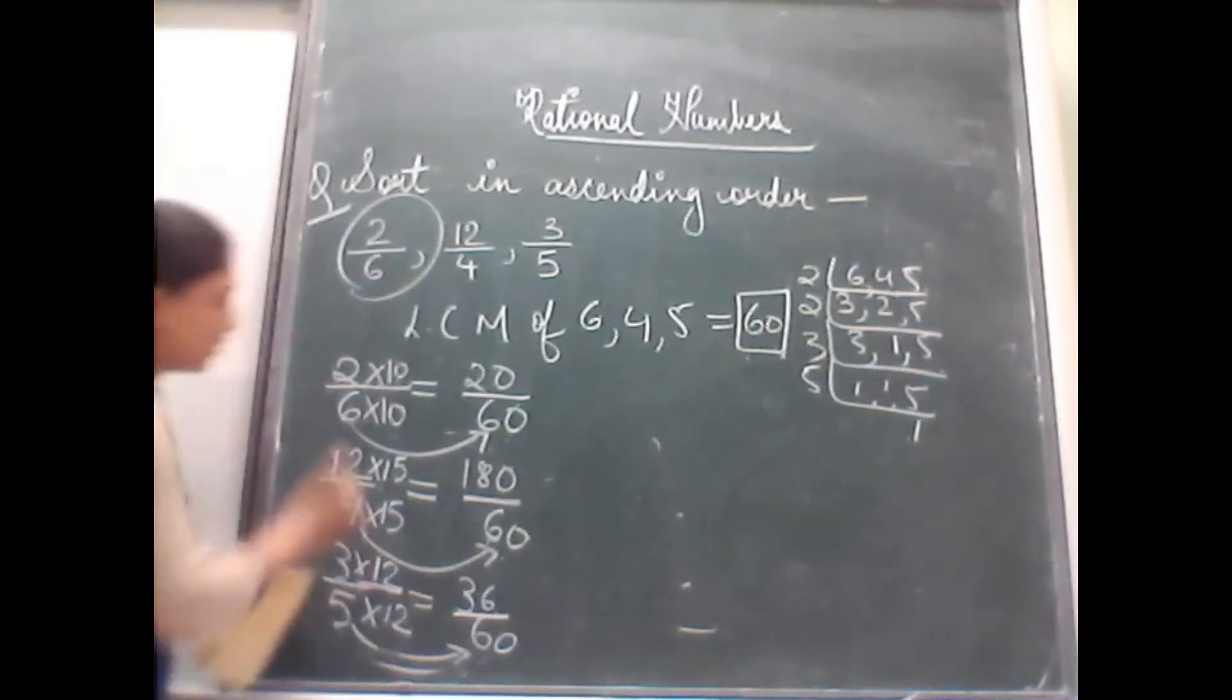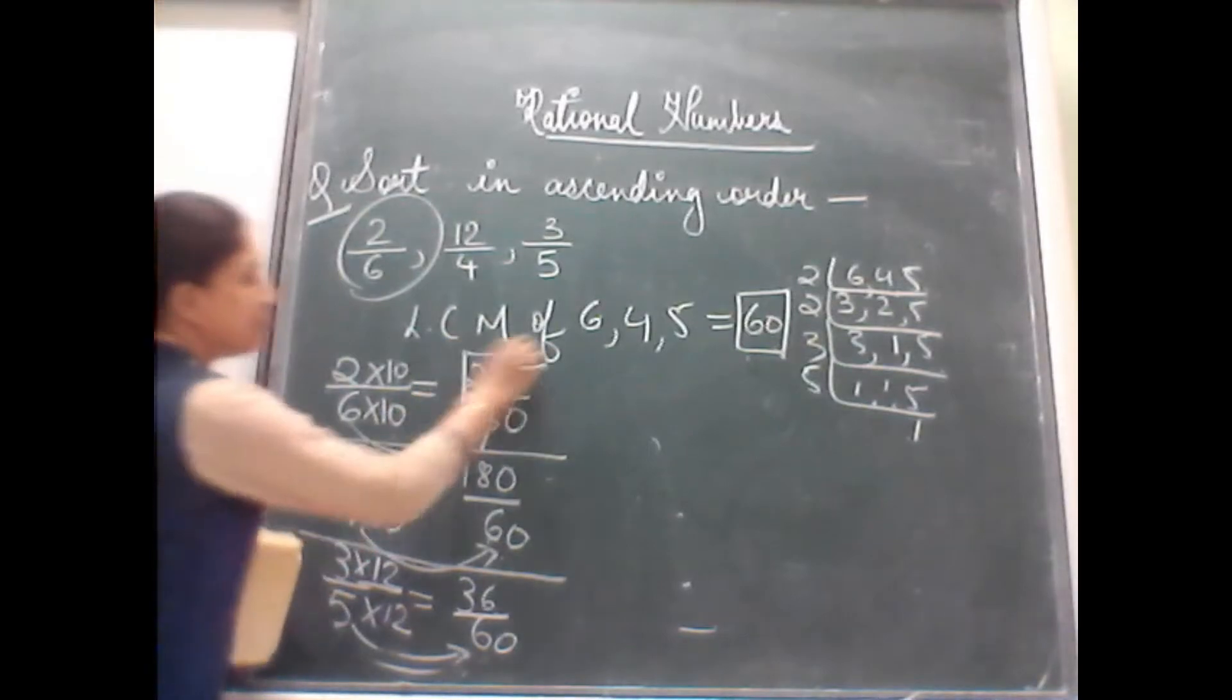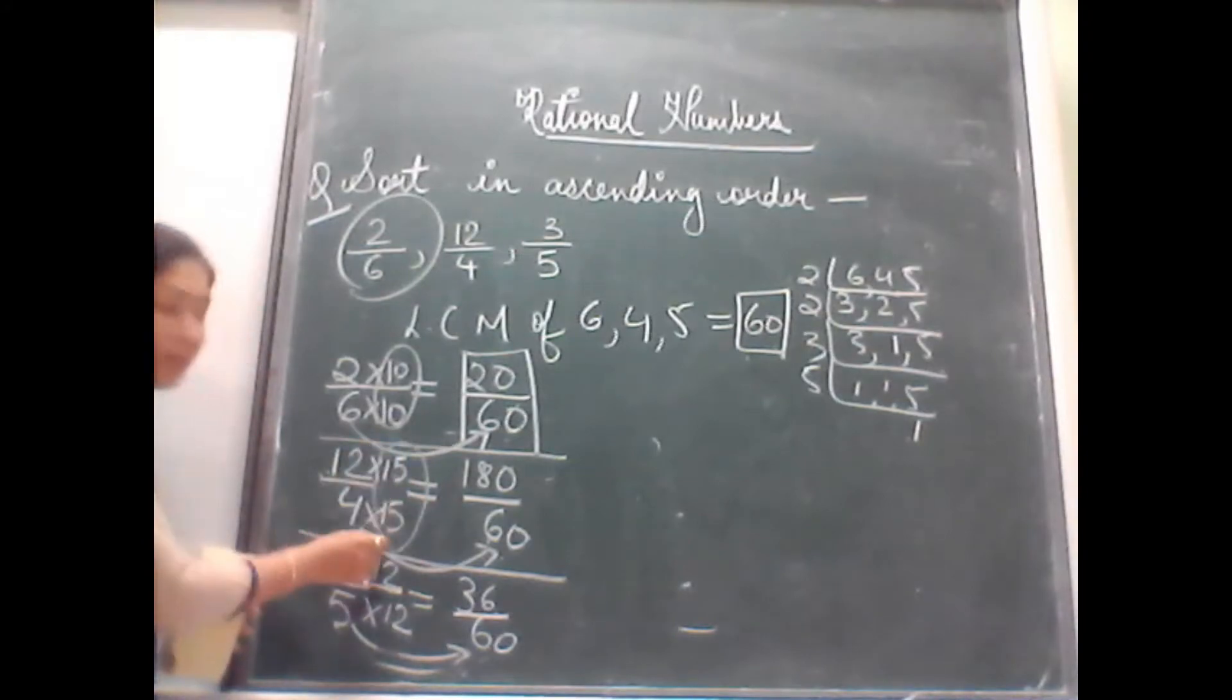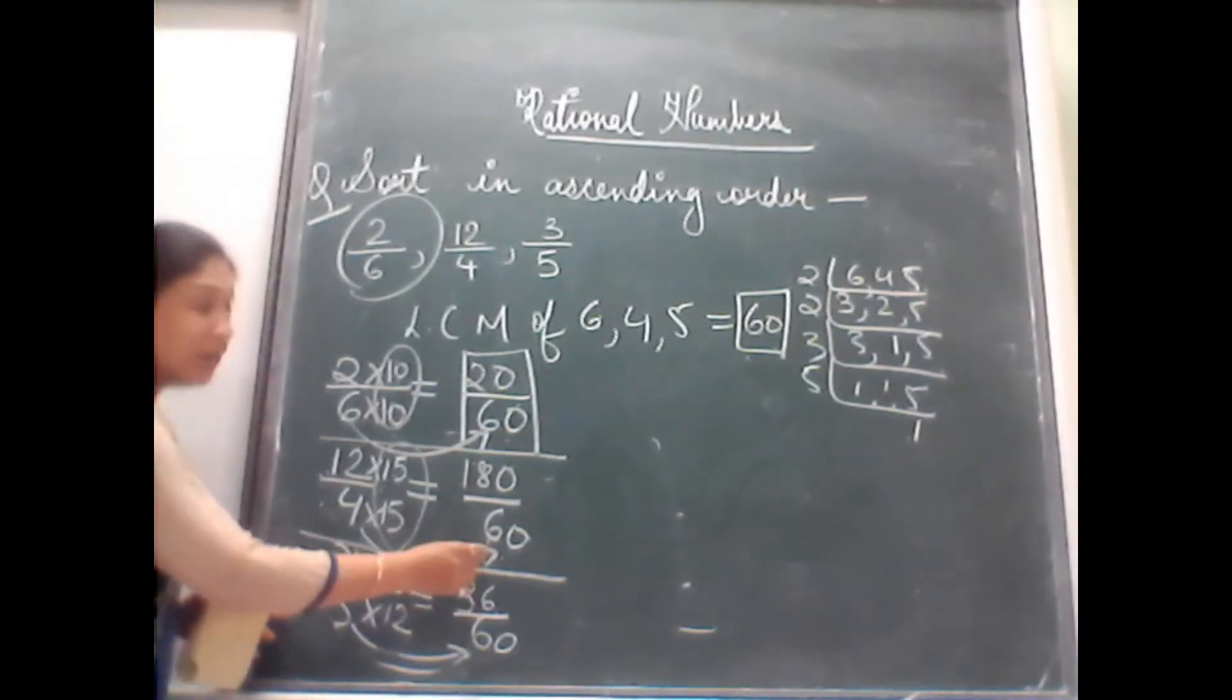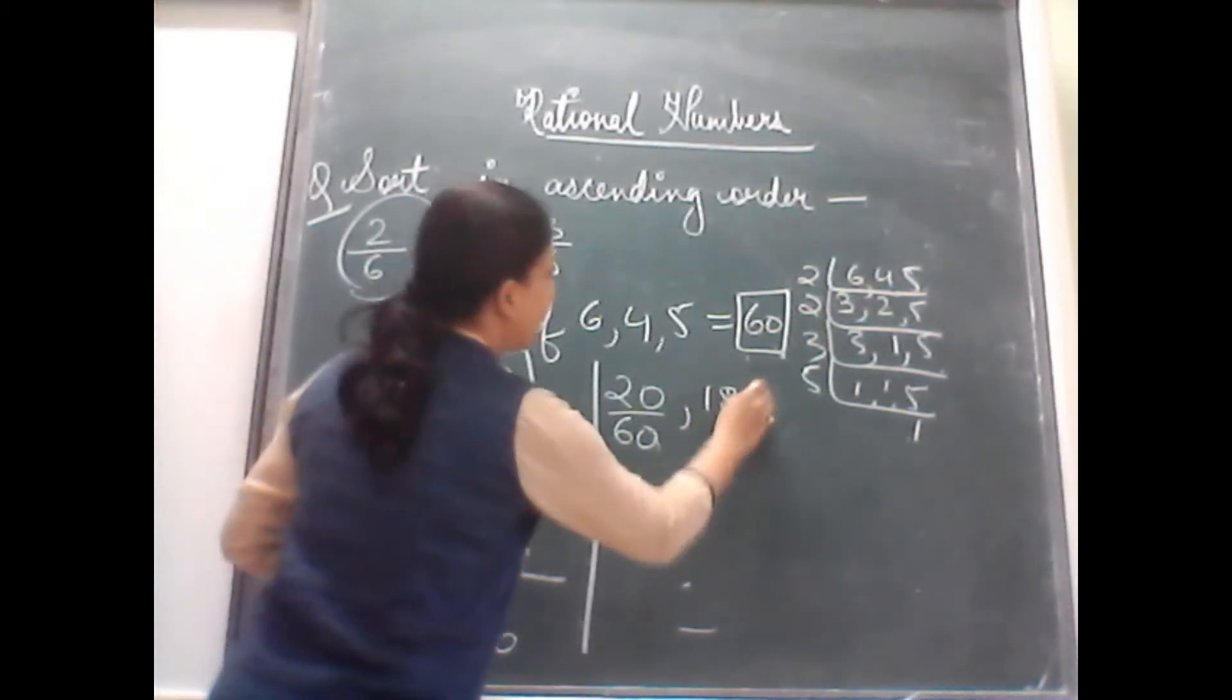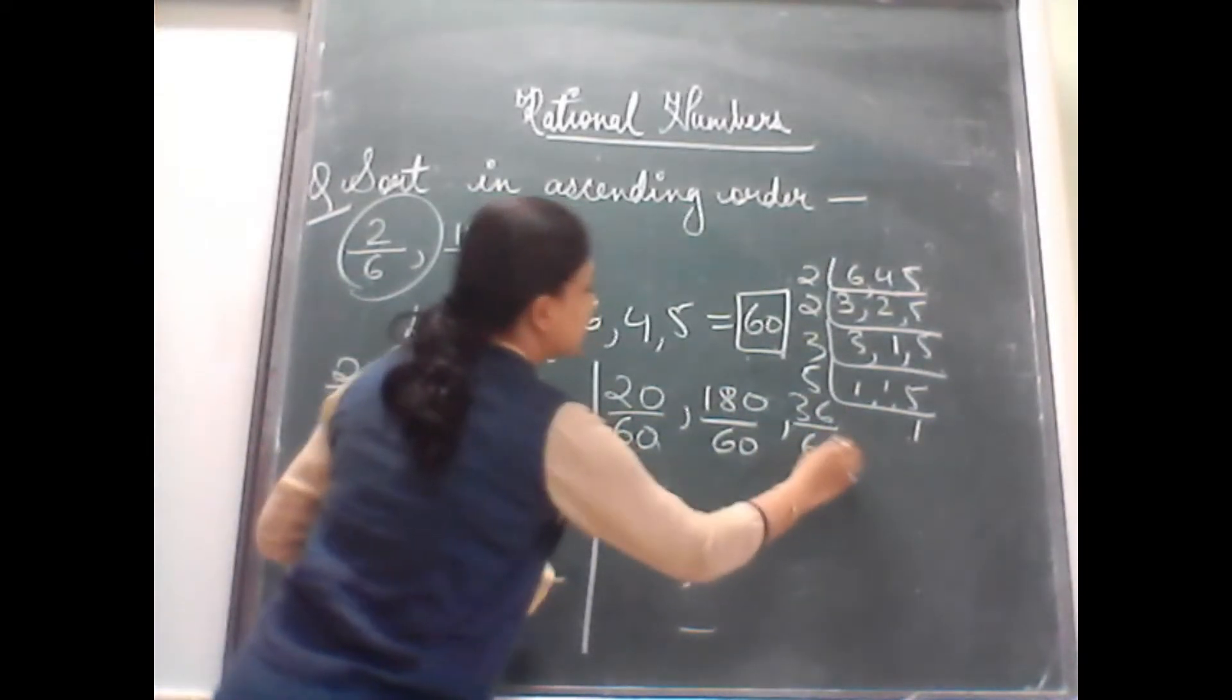Check children, what is this? See the numbers. When you compare it with the LCM, you see you have multiplied and divided by the same number. See here also, multiplying and dividing by the same number. So when you multiply and divide by the same number, what do we get? We get its equivalent fraction. Now let me write down these numbers. What we have got? 20 by 60, 180 by 60 and 36 by 60.